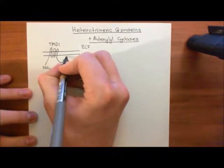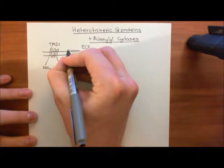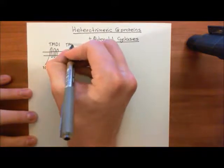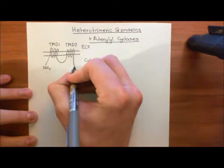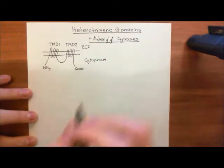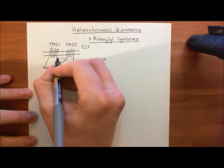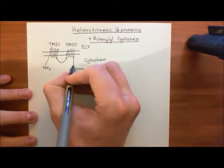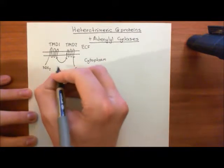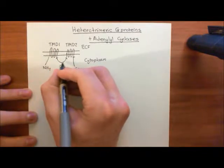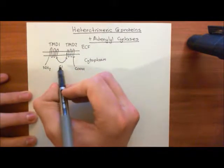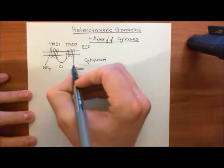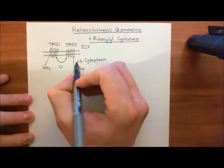Then there's a loop between TMD1 and the next transmembrane domain — transmembrane domain 2 — which also consists of six membrane-spanning alpha-helices bunched together. On the cytoplasmic side you then have the carboxylic acid tail. The loop between TMD1 and TMD2 is called C1, and the portion after transmembrane domain 2 is known as C2.